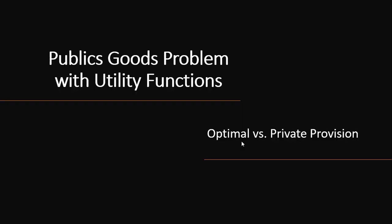In this video we're going to do a public goods problem where we have two consumers with utility functions. We're going to find the optimal and private provision of the public good.